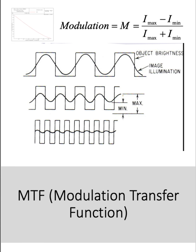This idea becomes really interesting and relevant when extended to the idea of resolving spatial frequencies. When imaging, these line spread functions overlap and create a wavy pattern that can reduce the modulation and make it harder to resolve the image. This concept is characterized by something called a modulation transfer function, or MTF curve. The MTF curve describes how well an optical system will perform as a function of the spatial frequency that it's trying to image.